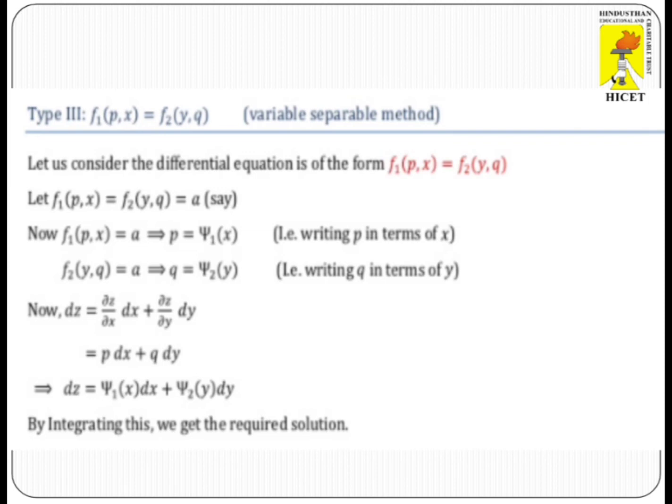So the left side, F1(P, X) = A, is used to find the value of P. Similarly, F2(Y, Q) = A is used to find the value of Q. After that, we use the total differentiation: DZ equals dou Z/dou X times DX plus dou Z/dou Y times DY.